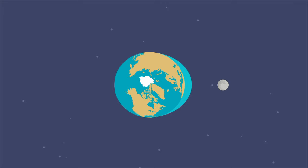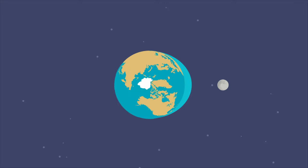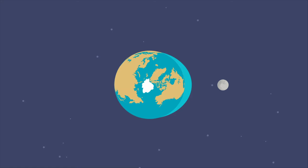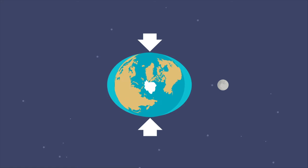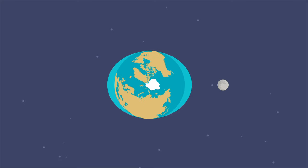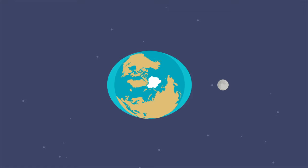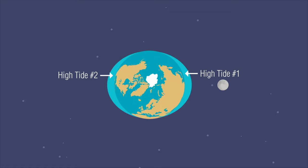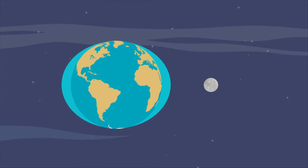But the tidal force actually affects the whole planet, not just one side of Earth. The total effect of the tidal force is that Earth experiences a squeeze, which causes the water to bulge on two sides. These two bulges explain why in one day there are two high tides. Earth's surface rotates through each of the bulges once a day.